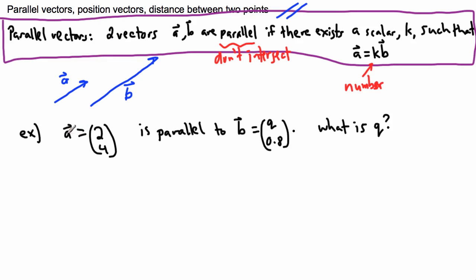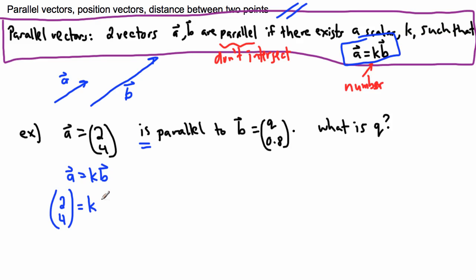Here we have an example. We're told that A equals (2, 4) and it is parallel to B, which is (Q, 0.8). The question is, what is Q? We're not asked to find if they're parallel — we're told they're parallel. Because of that, we know that there exists some K such that A equals K times B. That means (2, 4) equals some number K times (Q, 0.8).